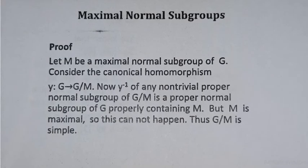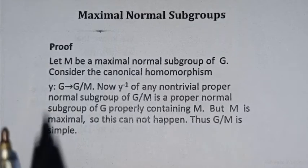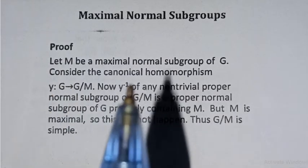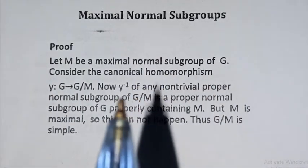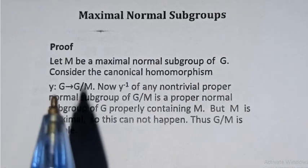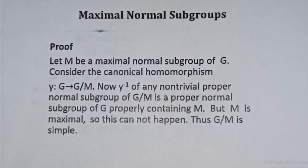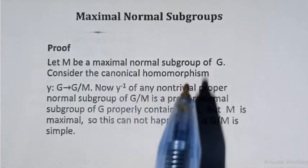When we prove this theorem, we have a direct direction and a converse. First, assume M is a maximal normal subgroup. We define a canonical homomorphism from G onto the factor group G over M, which is a surjective mapping.